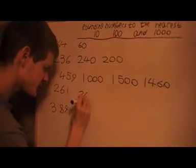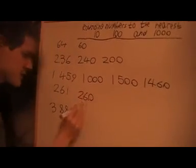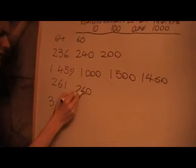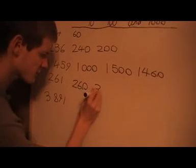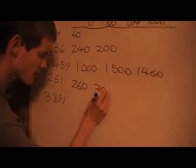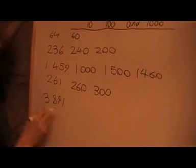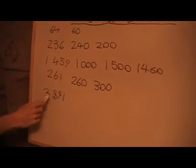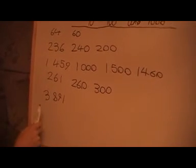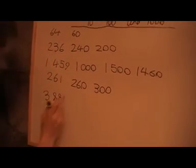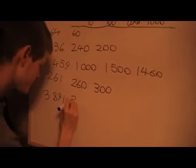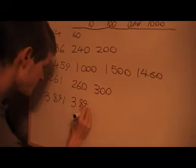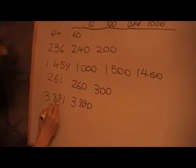For the next one, rounding to the nearest ten, the units digit is one, so round that to 260. The tens column is a six, so round that up to 300.